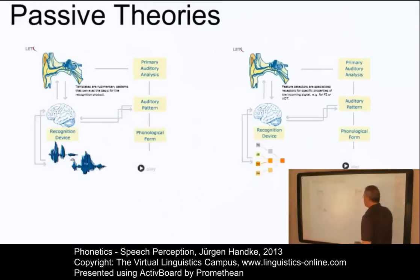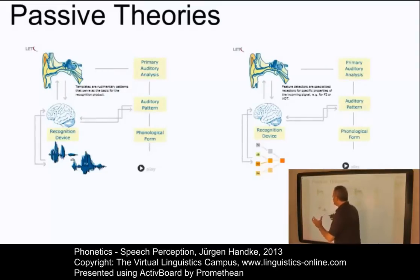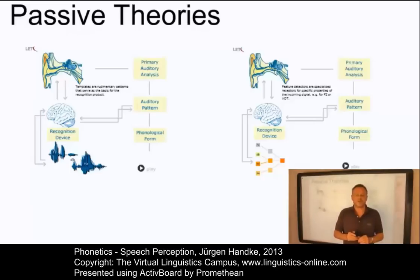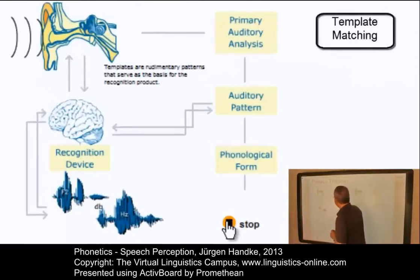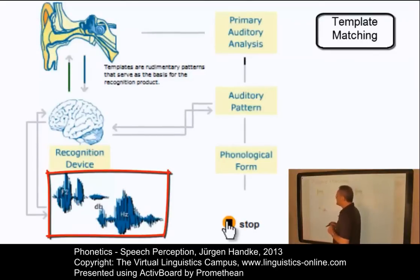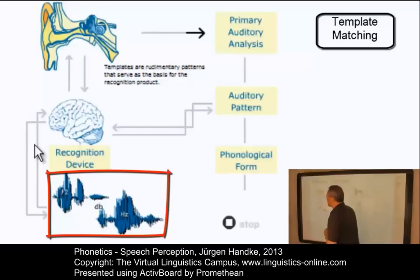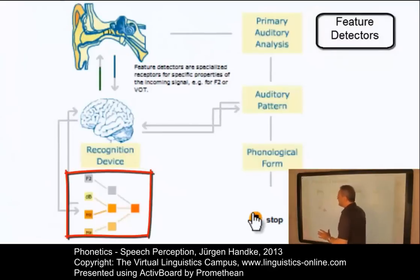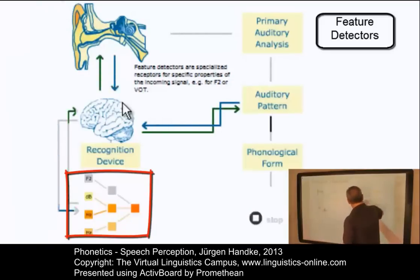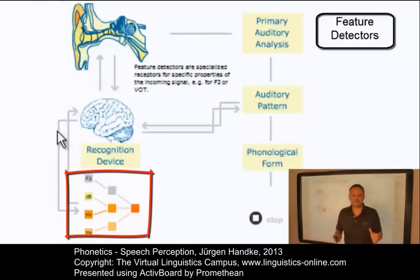Active theories can be contrasted with passive theories. The passive group of theories emphasizes the sensory side of the perceptual process and relegates the process of speech production to a minor role. They postulate the use of stored neural patterns which may even be innate. The theory of template matching proposes that templates are innate recognition devices that are rudimentary at birth and are tuned as language is acquired. The alternative is the feature detector theory, where feature detectors are specialized neural receptors necessary for the generation of auditory patterns.